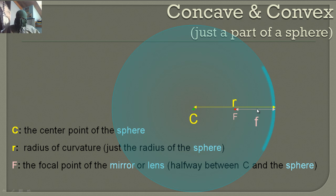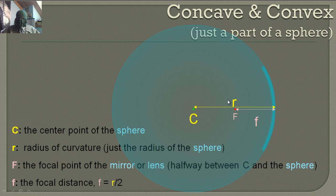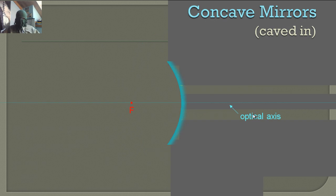The focal point F is halfway between C and the sphere — basically just half the radius. The focal distance, little f, is the radius divided by 2, which gives us half the radius.